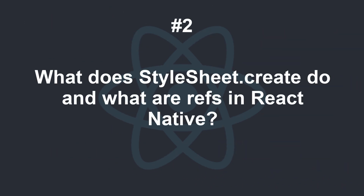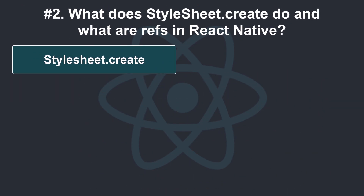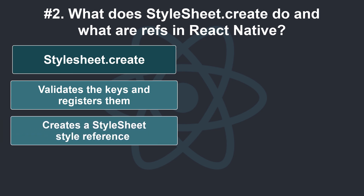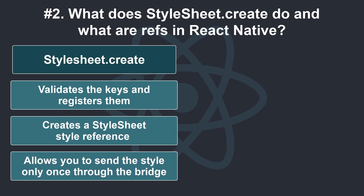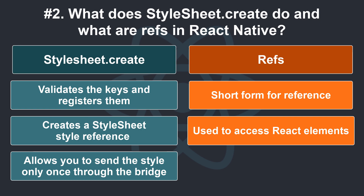What does StyleSheet.create do and what are refs in React Native? The StyleSheet.create function in React Native validates the keys and registers them to React, creates a stylesheet style reference from the specified object, and allows you to send the style only once through the bridge while referring to all subsequent uses through ID. Refs is short for reference and is used to access underlying DOM nodes or React elements within a React component.